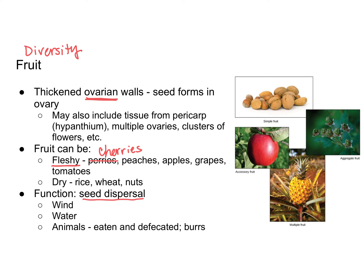Some seeds also have burrs. If you've ever walked your dog in a wooded area, you've probably had to pick little burrs off your pet. These burrs are designed for seed dispersal — they stick to things, and then as the animal moves around they eventually fall off or get removed, having been transported to another area.